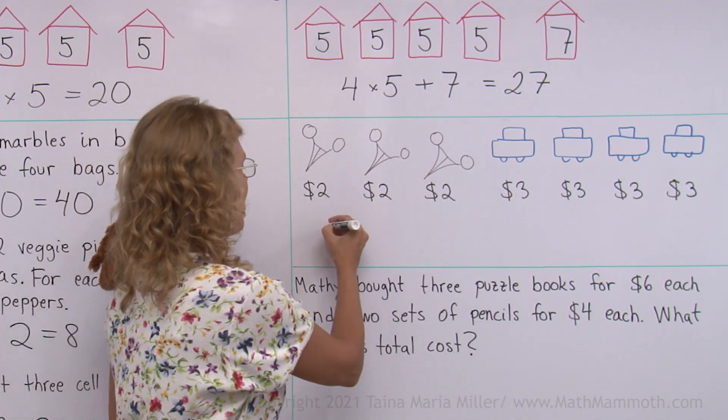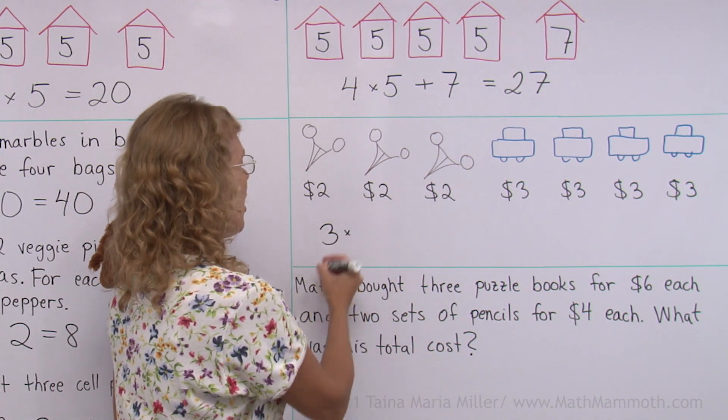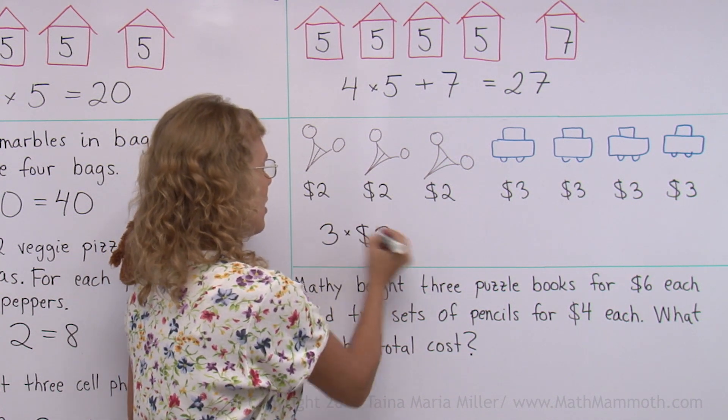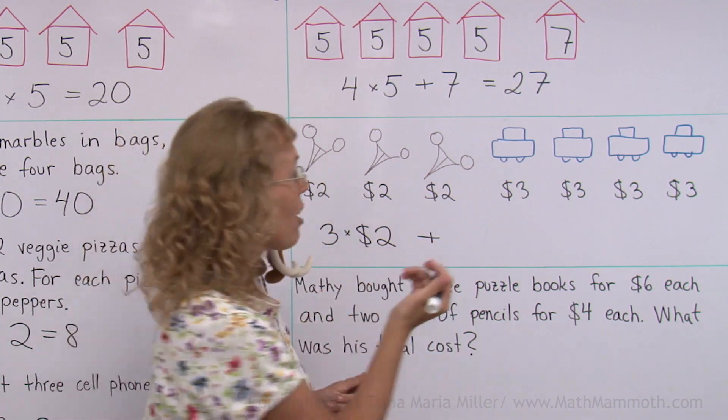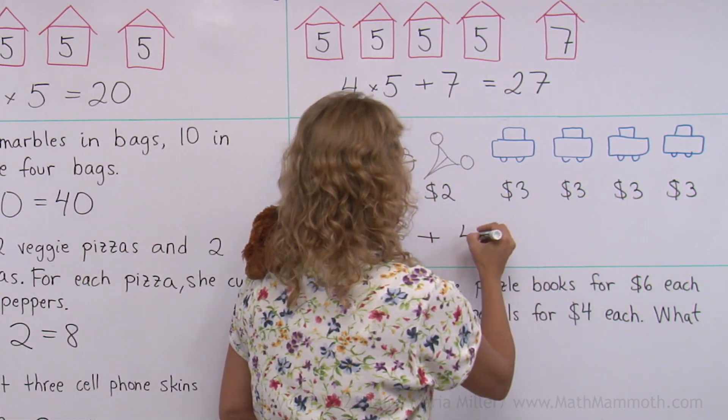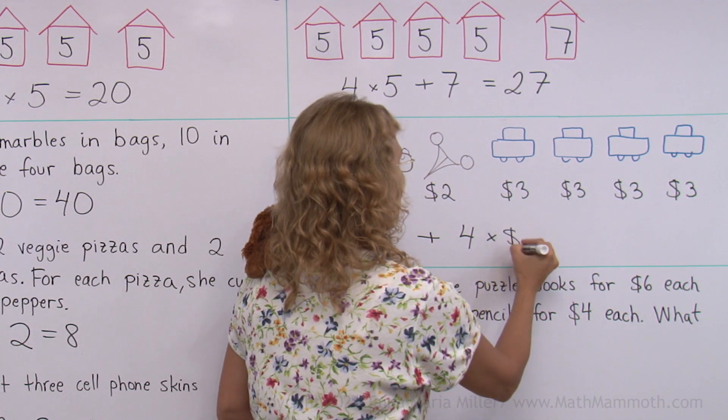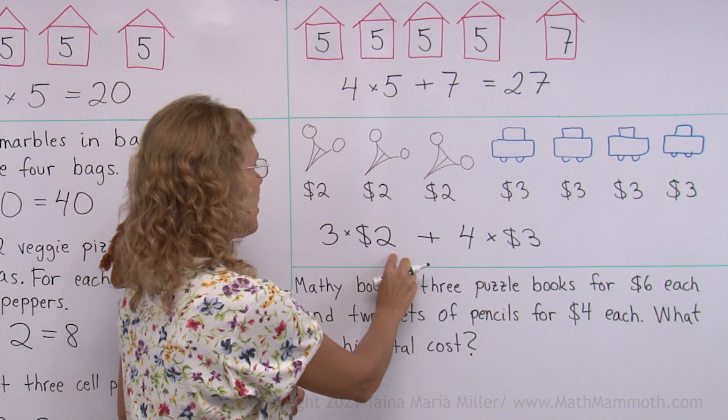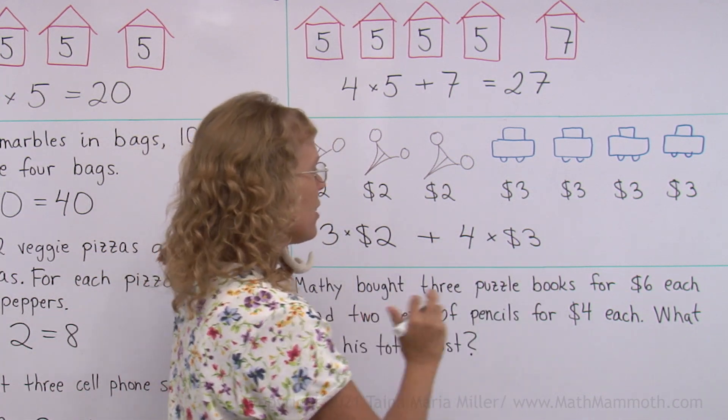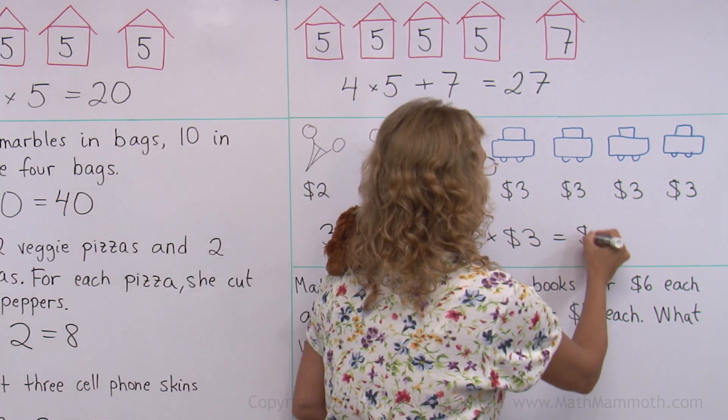There's three scissors times two dollars each pair of scissors. Then I add the cost of those toy cars. There are four cars times three dollars each. And so now we get here six and here twelve, and then add 6 + 12 = 18 dollars.